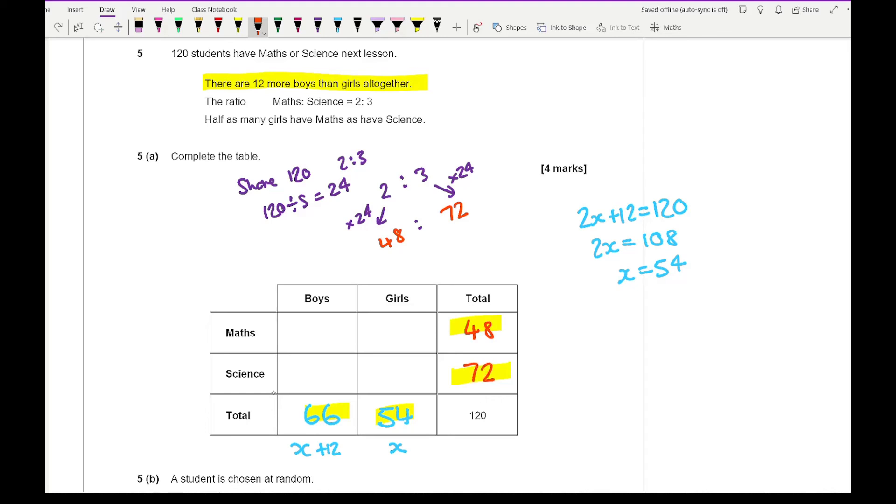Now from this, it then says that half as many girls have maths as have science. So there's more girls doing science, therefore. So then what we should have is splitting 54 in the ratio of 2 to 1. So I've got 54 divided by 3, and 54 divided by 3 is 18. So then this is going to be 18, and this is going to be 36. And then from this, I can then work out what the numbers are going to be for the boys. So 48 take away 18 is going to give me 30. And 72 take away 36 is also going to be 36. And now I've completed my table.